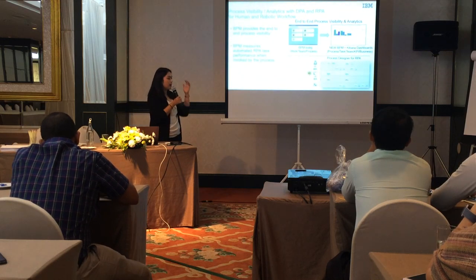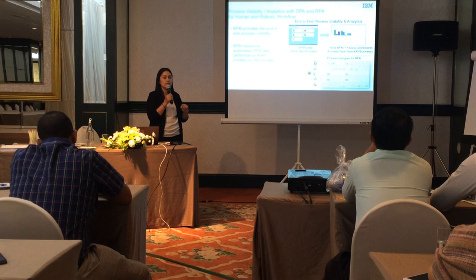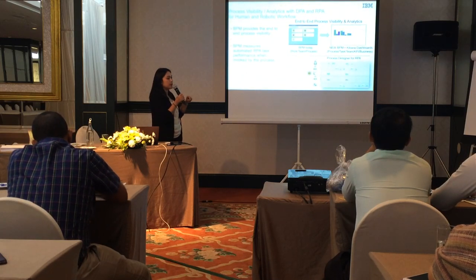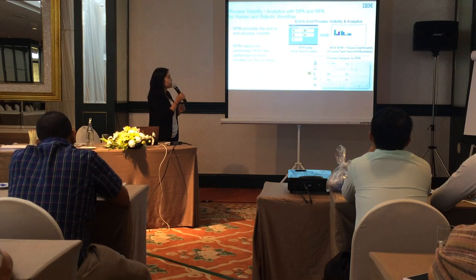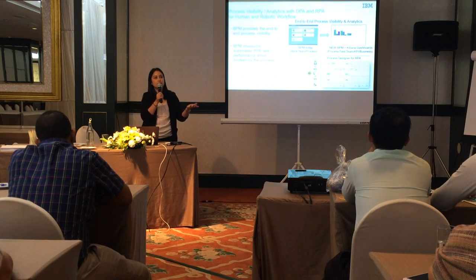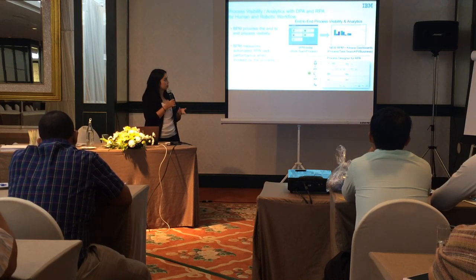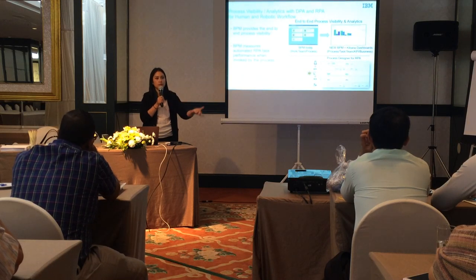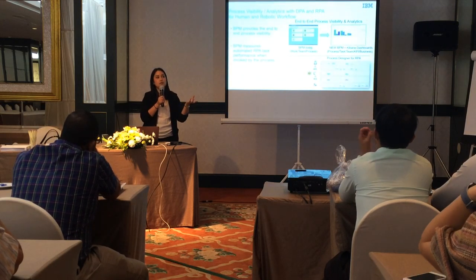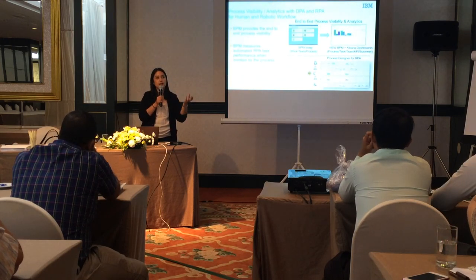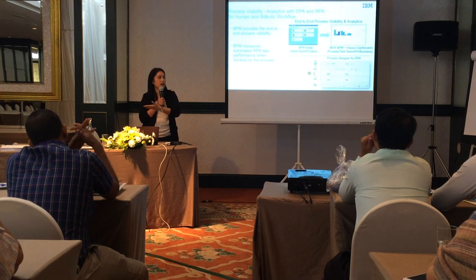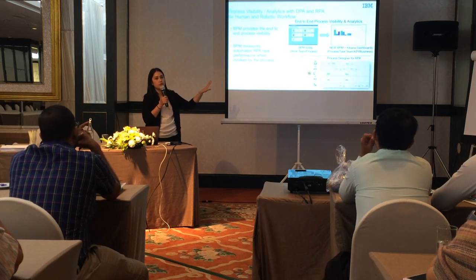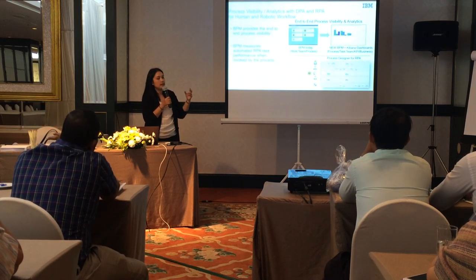In IBM RPA, we bundle two solutions together: RPA and BPM (Business Process Manager). BPM provides end-to-end process visibility so you can see the whole process — from human steps to robotic tasks. BPM ensures automated RPA tasks are performed when invoked by the process. You can define tasks in your process for the robot to execute, and after the robot completes an activity, it can pass output back to the process for a human to continue. You'll also have a dashboard to see work and team performance.